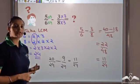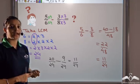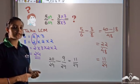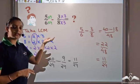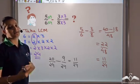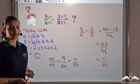So that's how you can add or subtract two rational numbers, whether they have the same denominator or different denominators.